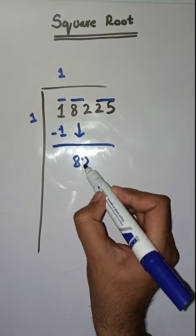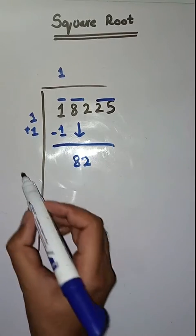Next pair is 82. We bring this down. So here we have to do 1 plus 1 which is equal to 2.